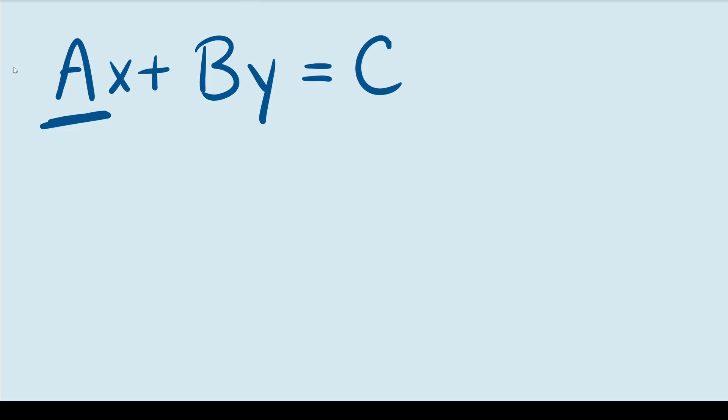Now this is very helpful because it lets us easily find the x and y intercepts. If I want to find the x intercept, all I have to do is plug in y equals zero. If I make y equal to zero, then this whole term goes away. And I'm left with Ax equals C. Now if I want to find x, all I have to do is divide both sides by A and that tells me that my x intercept is C over A.